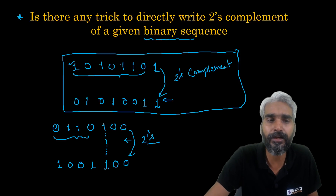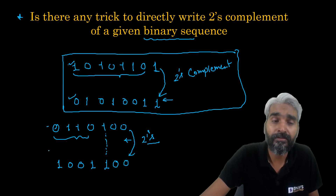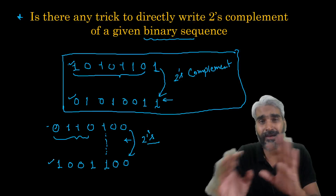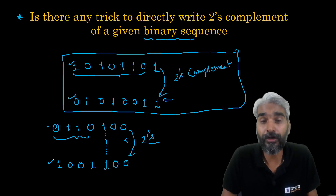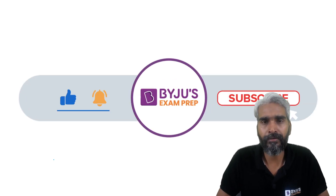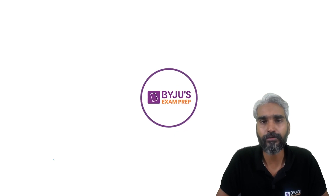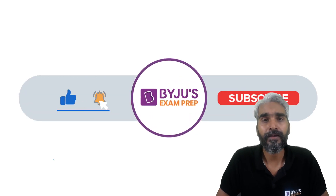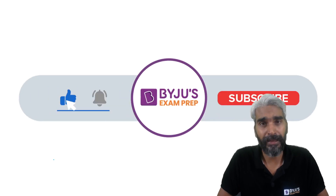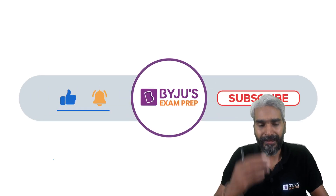This way you can write the two's complement for any binary sequence without knowing the magnitude or worrying about the sign. If it is negative, after two's complement it will become positive; if positive, it will become negative. I hope you liked the video and understood these short tricks. If so, please hit the like button, subscribe to the channel, and press the bell icon. Bye bye, take care.